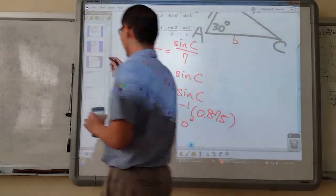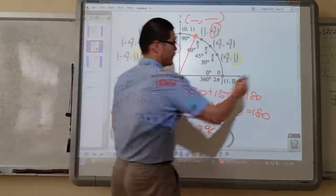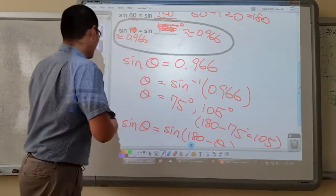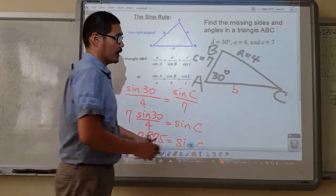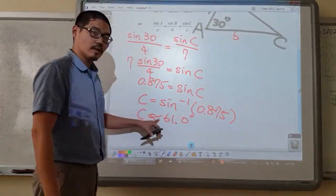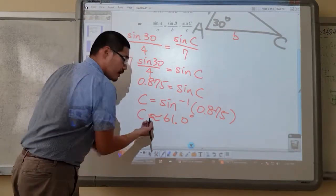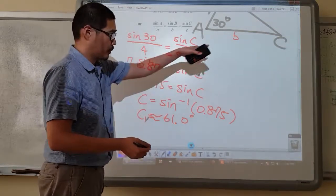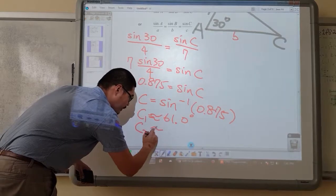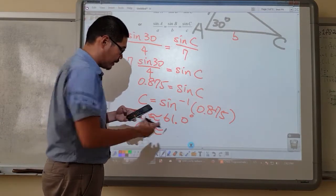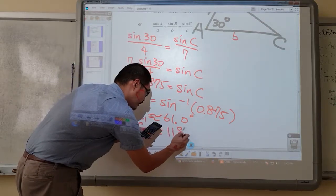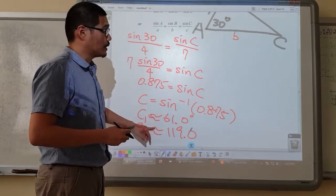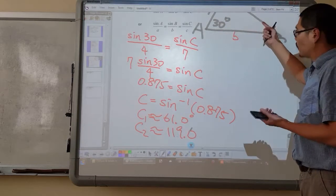However, remember what we talked about — the supplementary angles. There is also another angle that gives us the same sine value of 0.875, which is the supplementary angle of 61. So this is my C1 — my first possible angle measure for C. My C2, the second possible value, would be the supplementary angle of 61, which is 119.0 degrees.